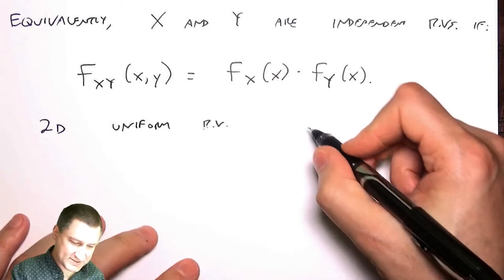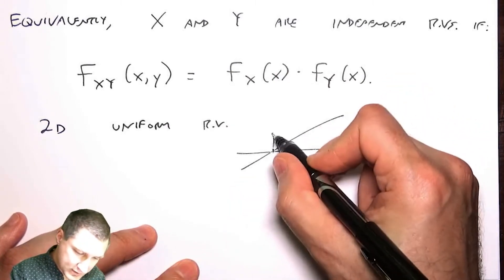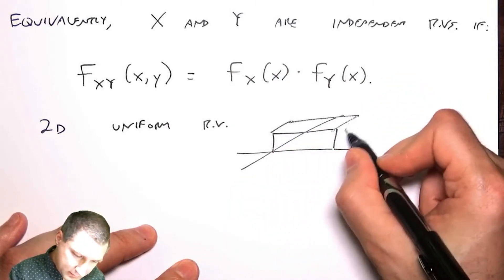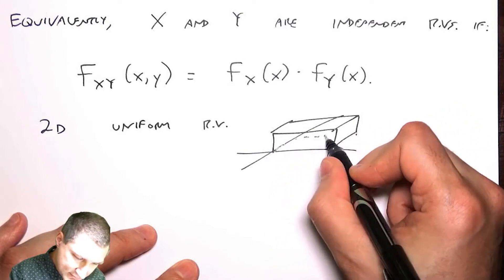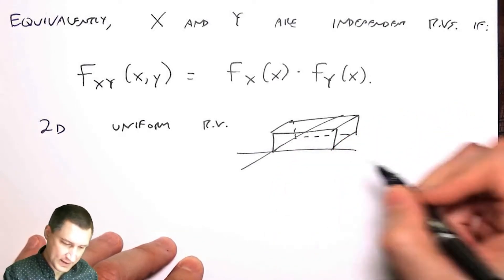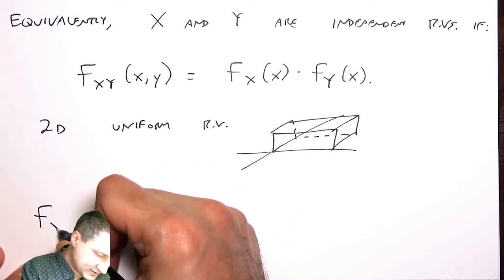this is basically like saying, okay, I have a joint PDF that looks like a box. And so that joint PDF